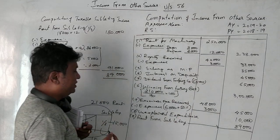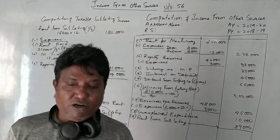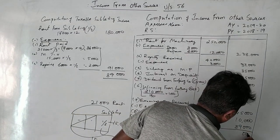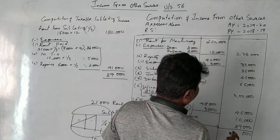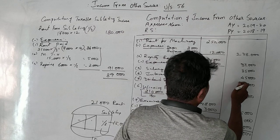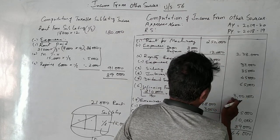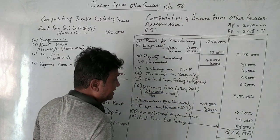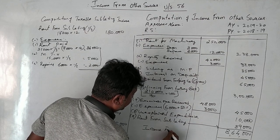Now checking the totals: the total income from other sources comes to ₹8,64,000 rupees.